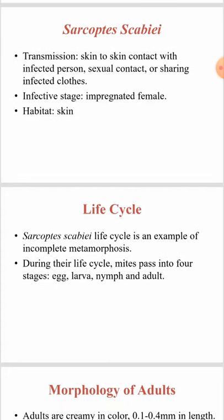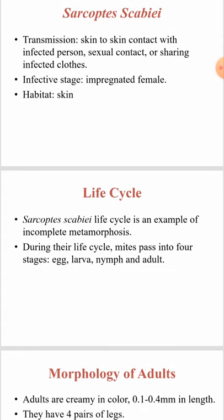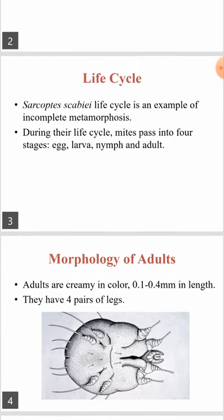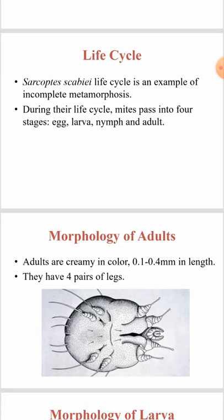The infective stage is the impregnated female. The habitat is the skin. An important point about the life cycle is that the scabies parasite passes through four stages of development: from the egg, then larva, then nymph, and finally it becomes adult. It represents an example of what's called incomplete metamorphosis.